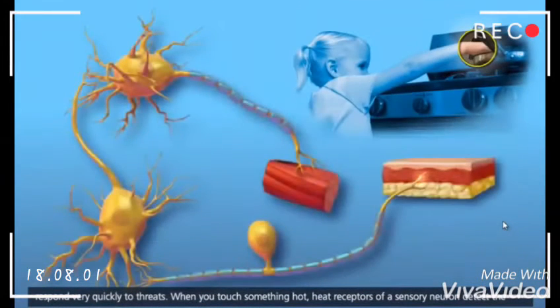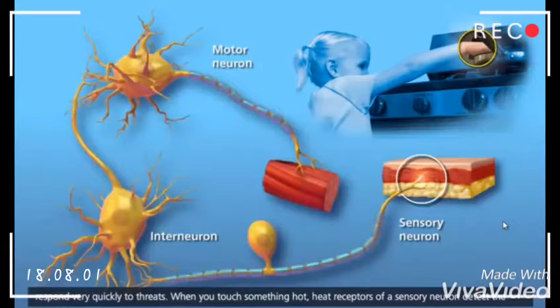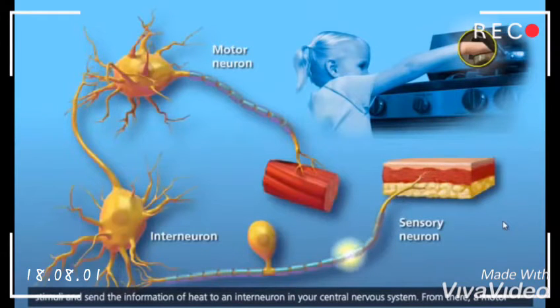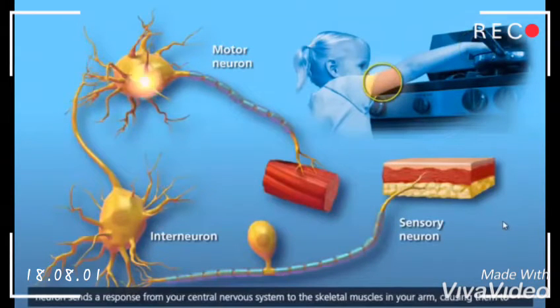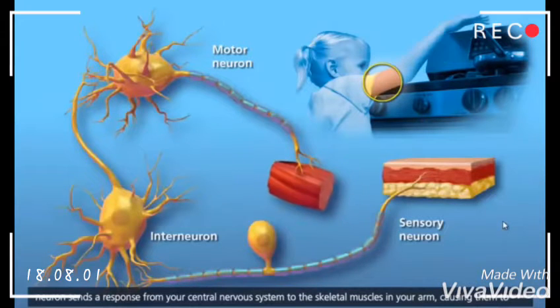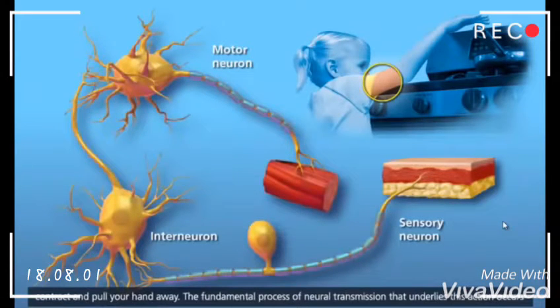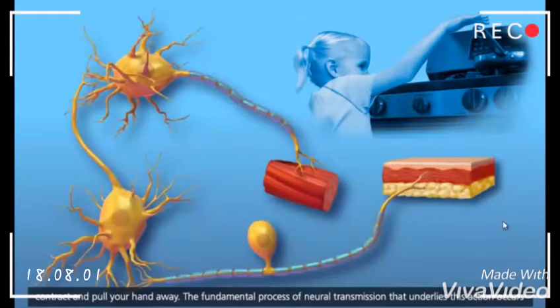When you touch something hot, heat receptors of a sensory neuron detect the stimuli and send the information of heat to an interneuron in your central nervous system. From there, a motor neuron sends a response from your central nervous system to the skeletal muscles in your arm, causing them to contract and pull your hand away.